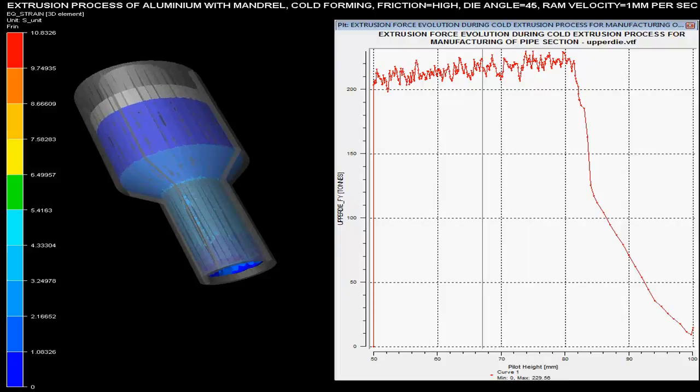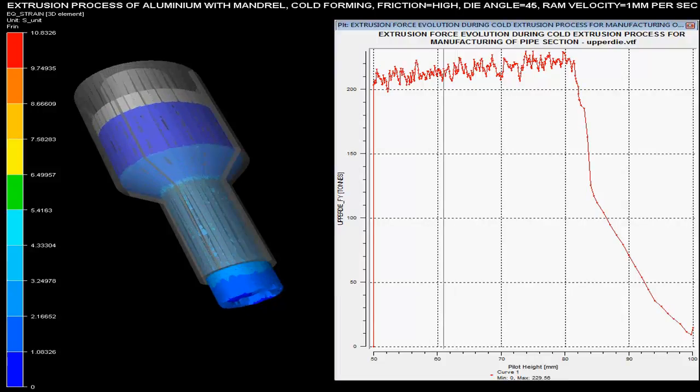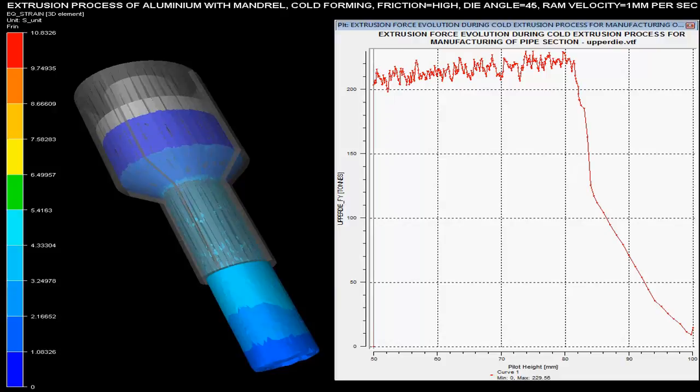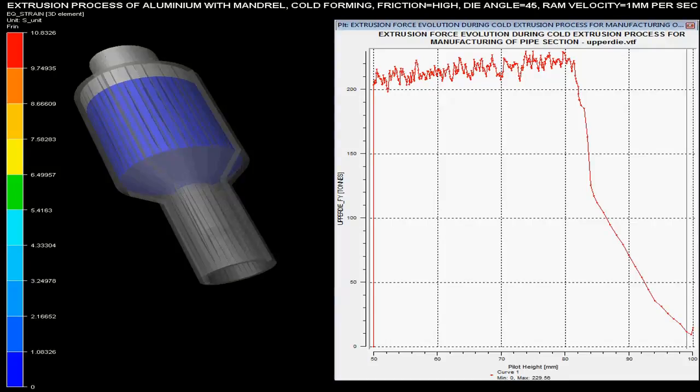Extrusion forces with respect to pilot height are shown on the graph. These forces are maximum when there is a sudden change in the cross-sectional area of the billet. As the pilot height reduces, the force required for extrusion of the pipe increases.